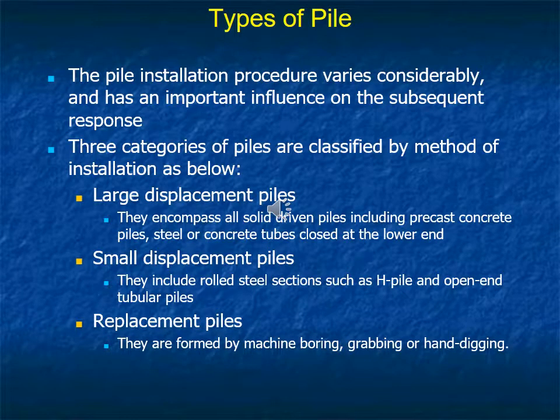Apart from the above, there is another type of pile classification. The pile installation procedure varies considerably and has an important influence on subsequent response. These categories are classified by method of installation as: large displacement piles, small displacement piles, and replacement piles. Displacement piles include all solid driven piles including precast concrete piles and steel or concrete tubes closed at the lower end. Small displacement piles include rolled steel sections such as H-piles and open-ended tubular piles.